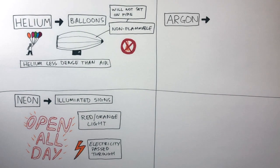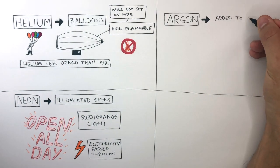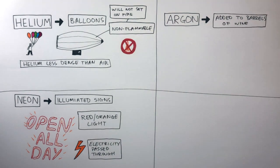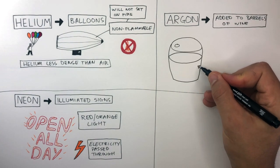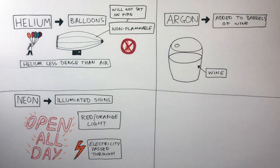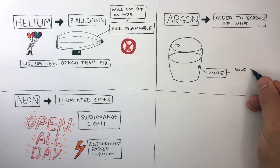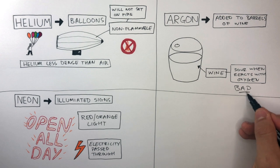Argon is the third element in Group Zero, and is added to barrels of wine to keep the wine fresh. Here is a barrel storing wine. And in that space above the wine, there's oxygen, which causes the wine to become sour when it reacts with the oxygen. And this is bad. We do not want the wine to become sour tasting, like vinegar.